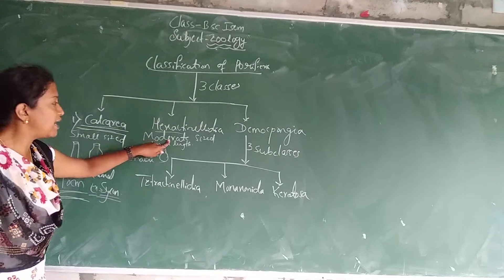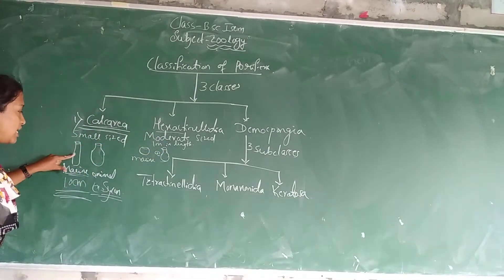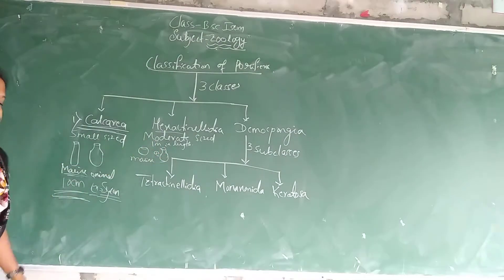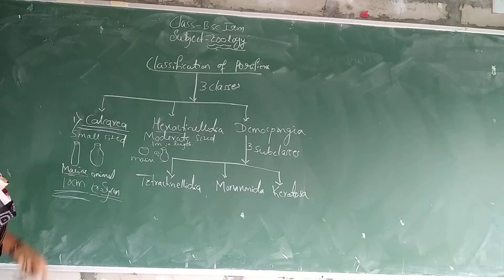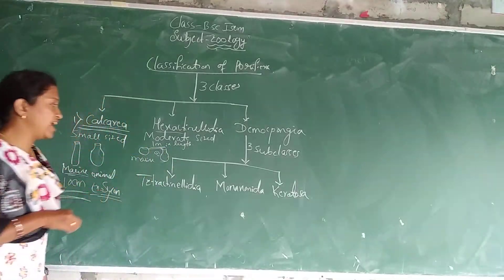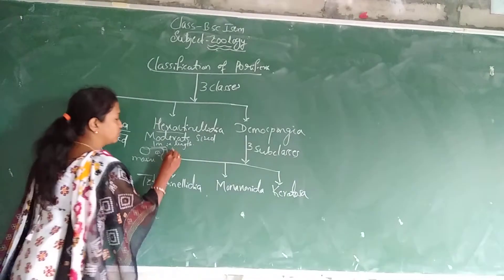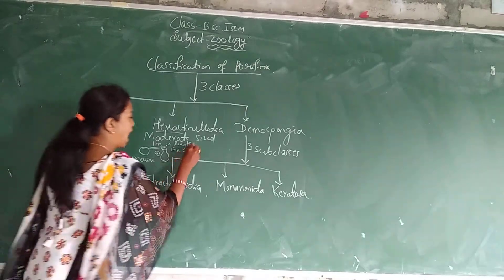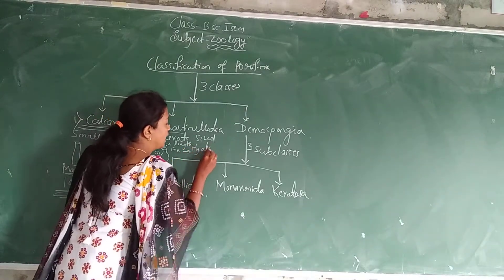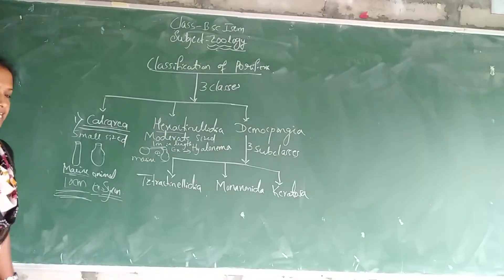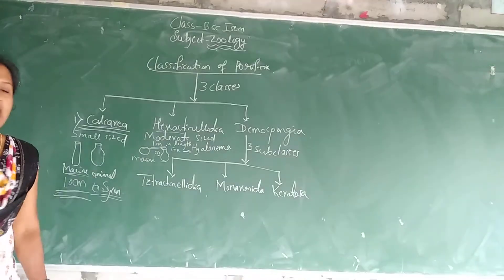Characteristics of Hexactinellida: these are moderate size, cup-like or vase-like in structure, and marine animals. The length of the animal is up to 1 meter. The example of Hexactinellida is Hyalonema.